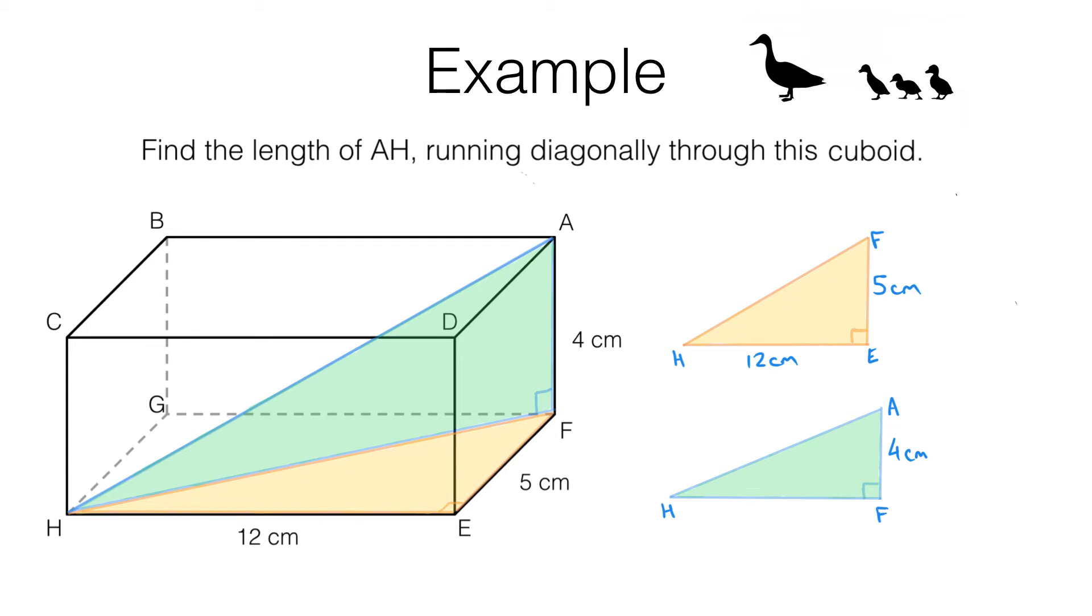Now remember, what are we looking for? We're looking for the length AH. That's this length here. Do we have enough information on this green triangle to work out AH? Unfortunately, we don't. If we had HF here, we could use Pythagoras' theorem. We'd know that this side squared plus this side squared would give us the length of this side squared. But unfortunately, we don't have the length HF.